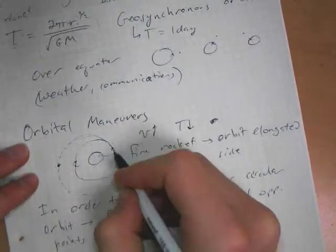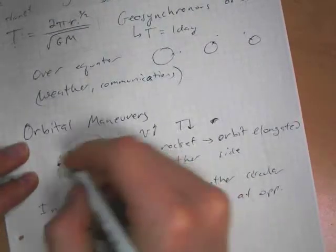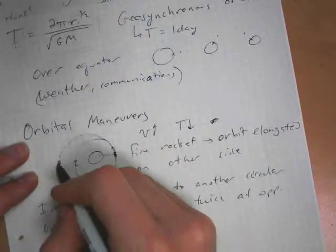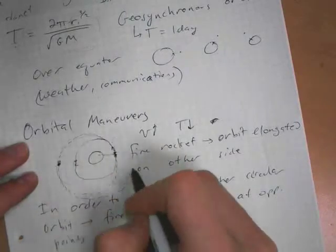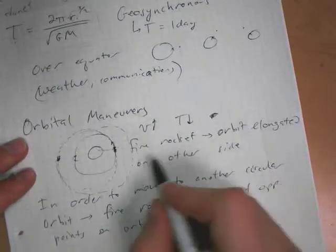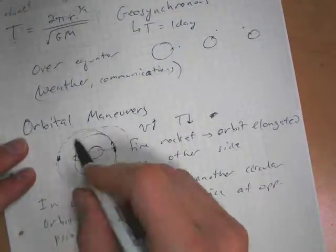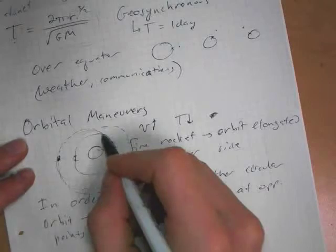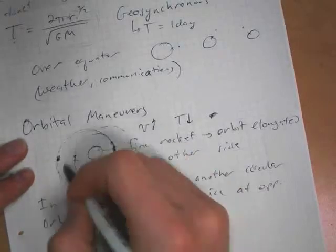you have to fire rockets twice at opposite points in the orbit. So if you're on this orbit, you fire the rockets here, you move on to this ellipse, then you fire the rockets here again, and that will put you back on a circular path that's now bigger. If you want to go to a smaller orbit, you reverse-fire your rockets, and that will create an ellipse, and then you reverse-fire over here, and you're on to a smaller circle.